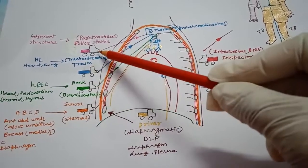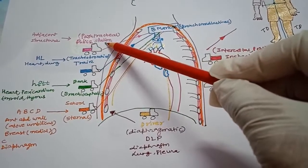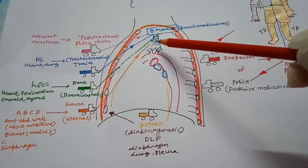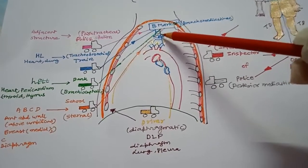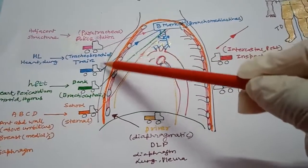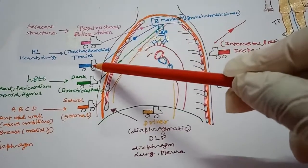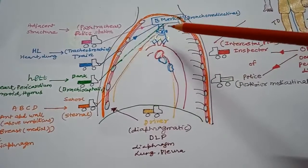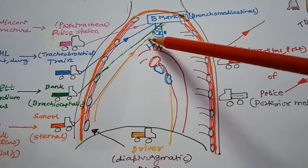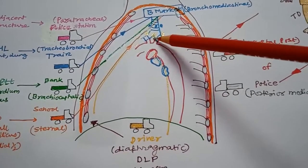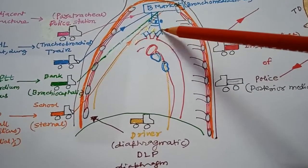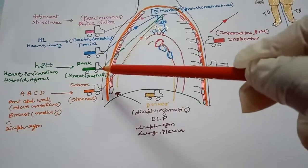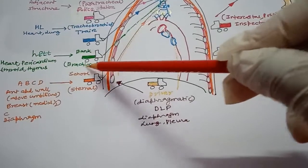The anterior row or primary channel consists of four garbage trucks. The first is coming from the police station — it is the paratracheal or pretracheal lymph node, which lies in front or by the side of the trachea, shown in blue color. The second garbage truck, shown in golden color, is the tracheobronchial lymph node, lying by the side of the trachea and just below the carina, forming a triangular pattern.